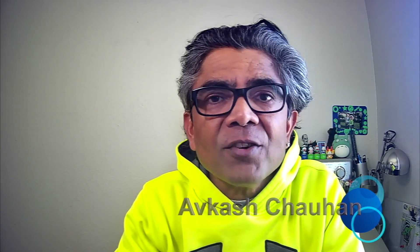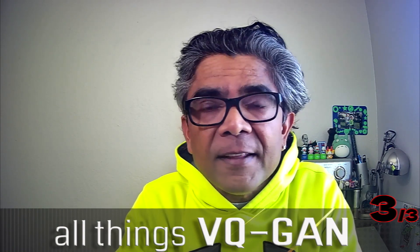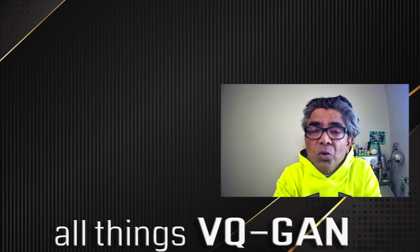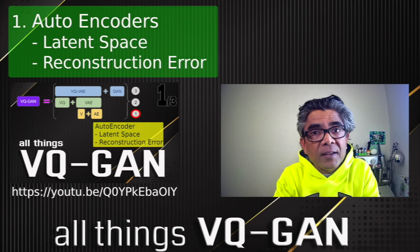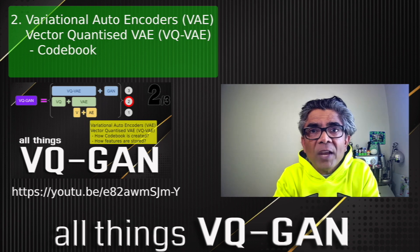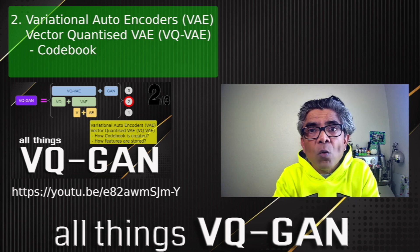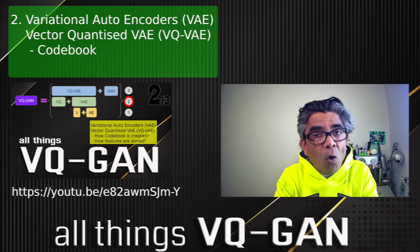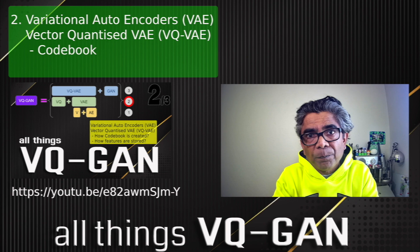Hello again everyone, my name is Avkash and you are all welcome to the third and final video related to our 'All Things VQGAN' series. In the first two videos we covered autoencoders with emphasis on latent space and reconstruction error, and the second video covered variational autoencoders as well as vector quantized variational autoencoders, with emphasis on the codebook — how it is generated, how features are stored, and how it is used to reconstruct or generate images.